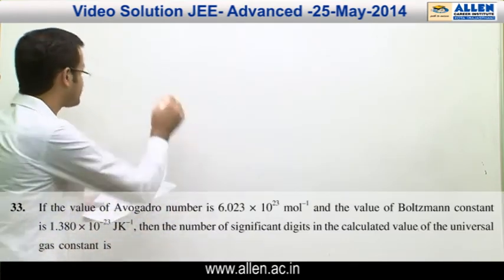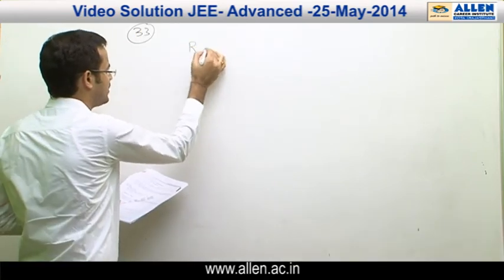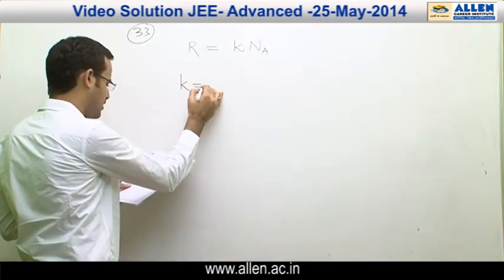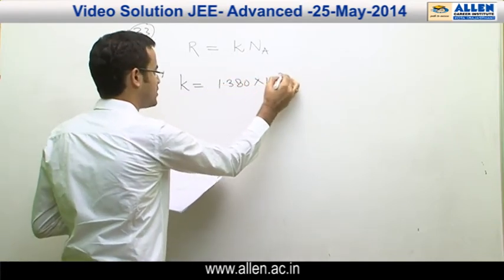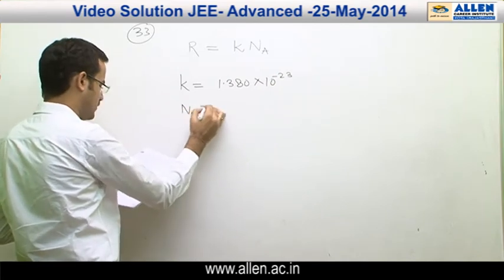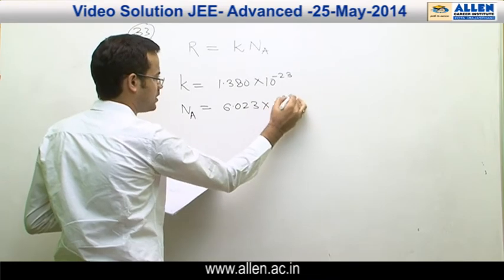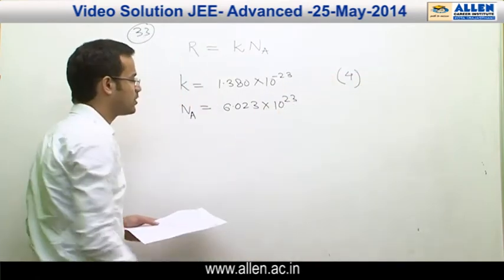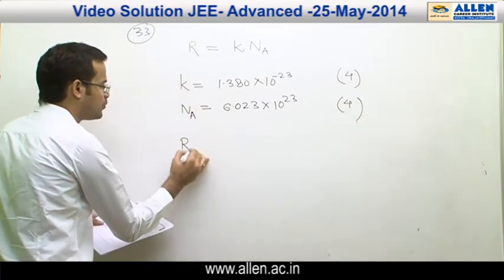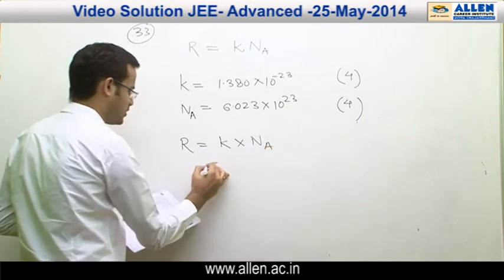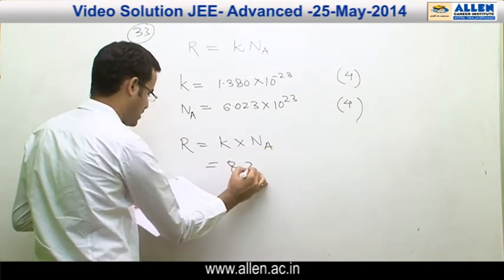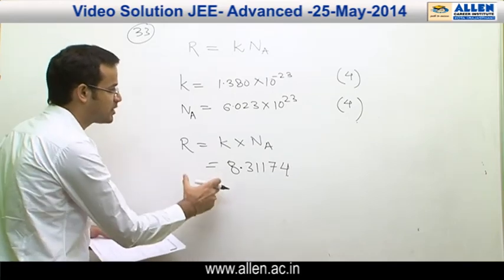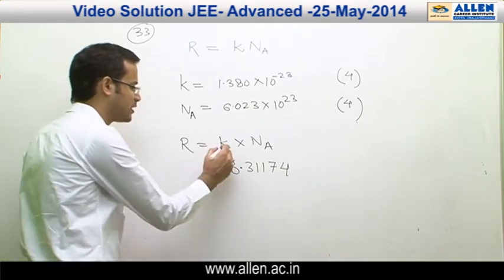Question number 33: Universal gas constant equals to Boltzmann constant multiplied by Avogadro number. Here Boltzmann constant equals to 1.380 into 10 raised to power minus 23 and Avogadro number equals to 6.023 into 10 raised to power 23. The number of significant figures for Boltzmann constant is 4 and for Avogadro number it is also 4. The product of Boltzmann constant and Avogadro number equals to 8.31174. But the number of significant figures in the result cannot be more than the number of significant digits of the terms multiplied.